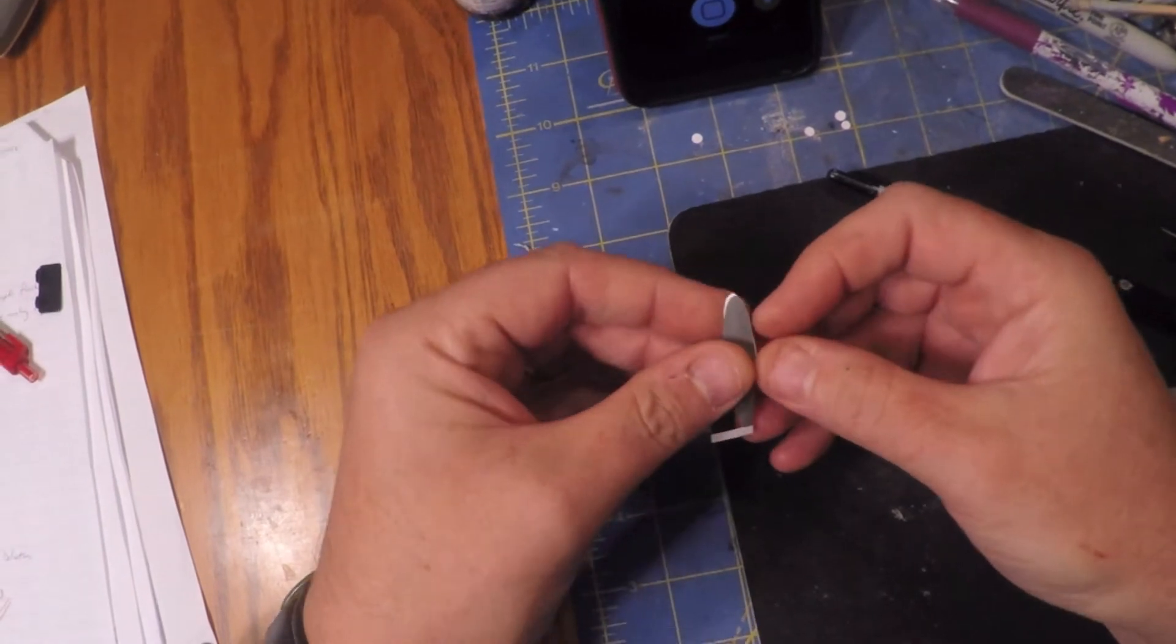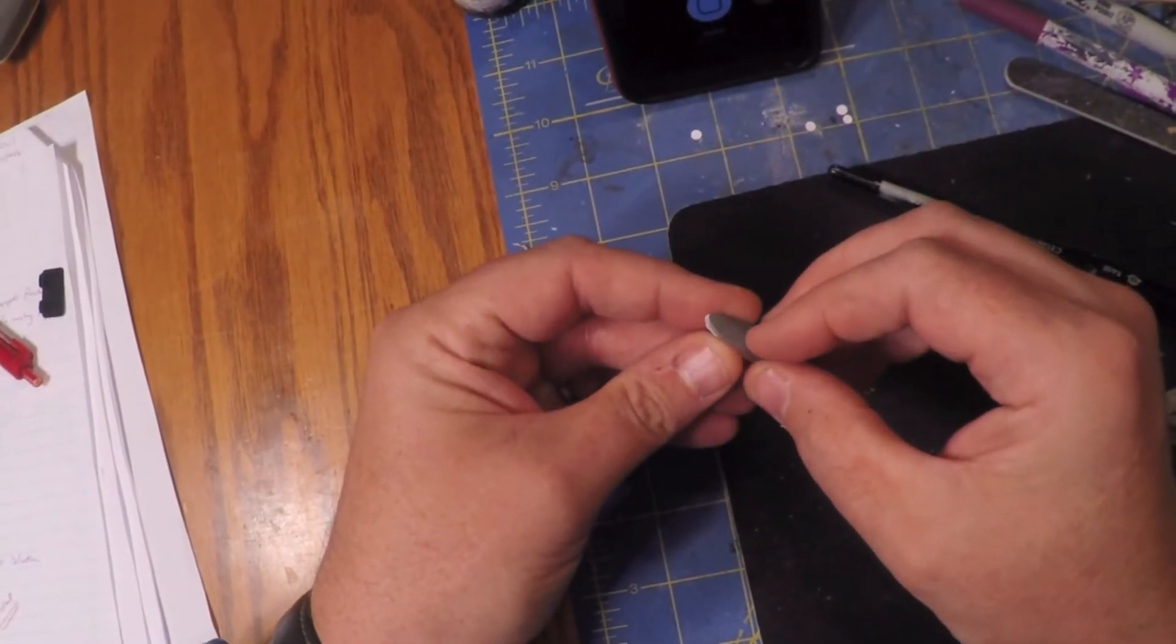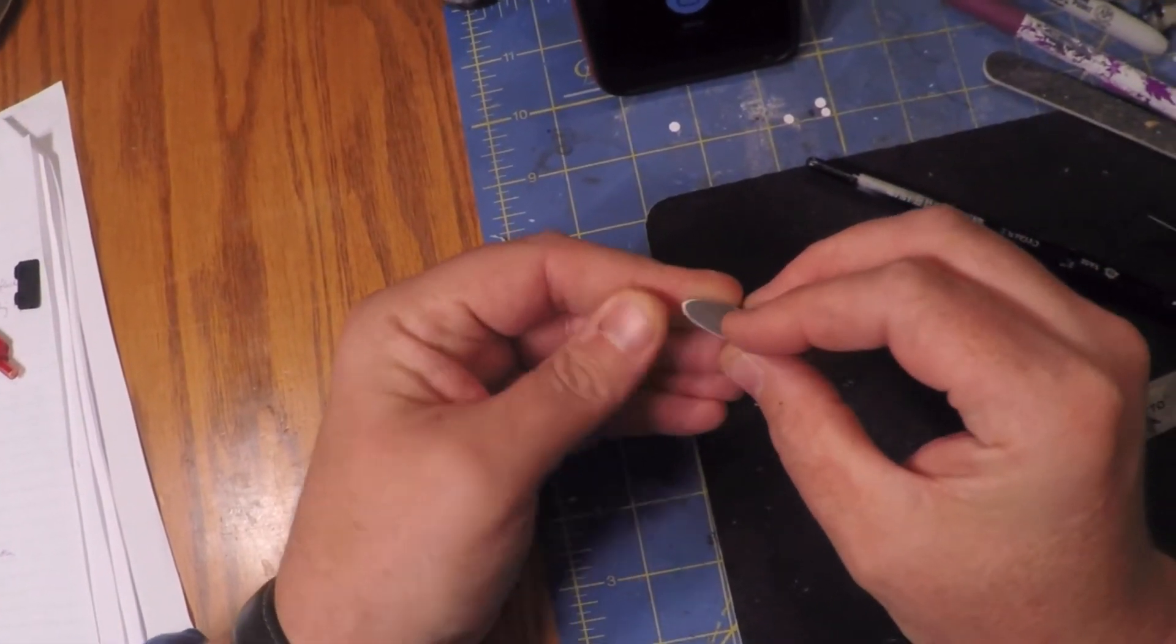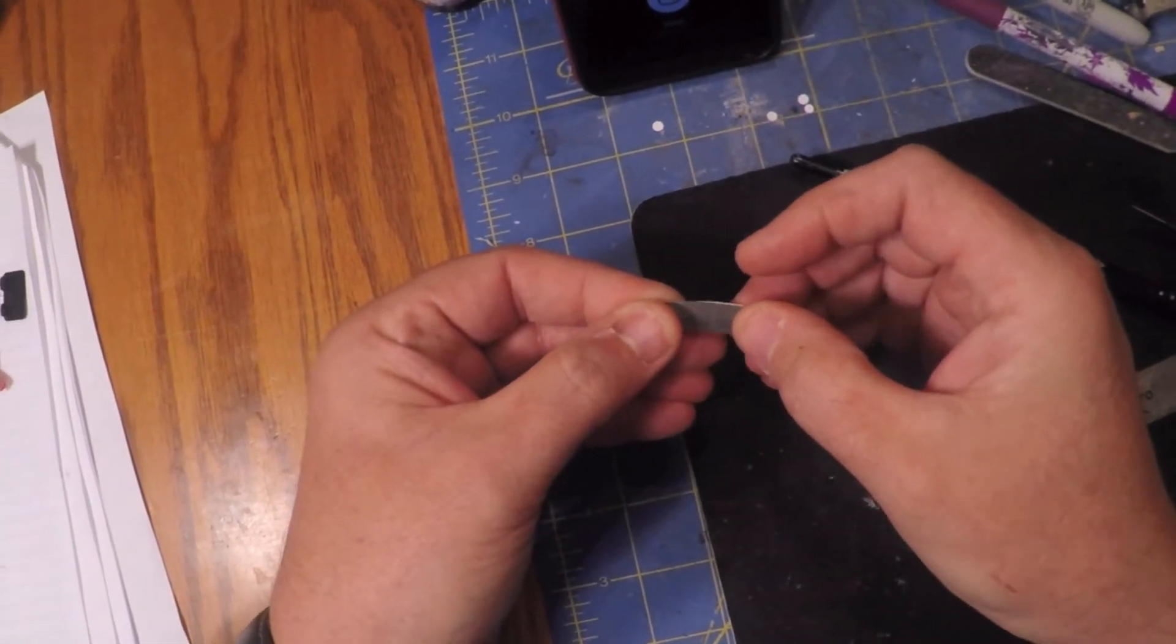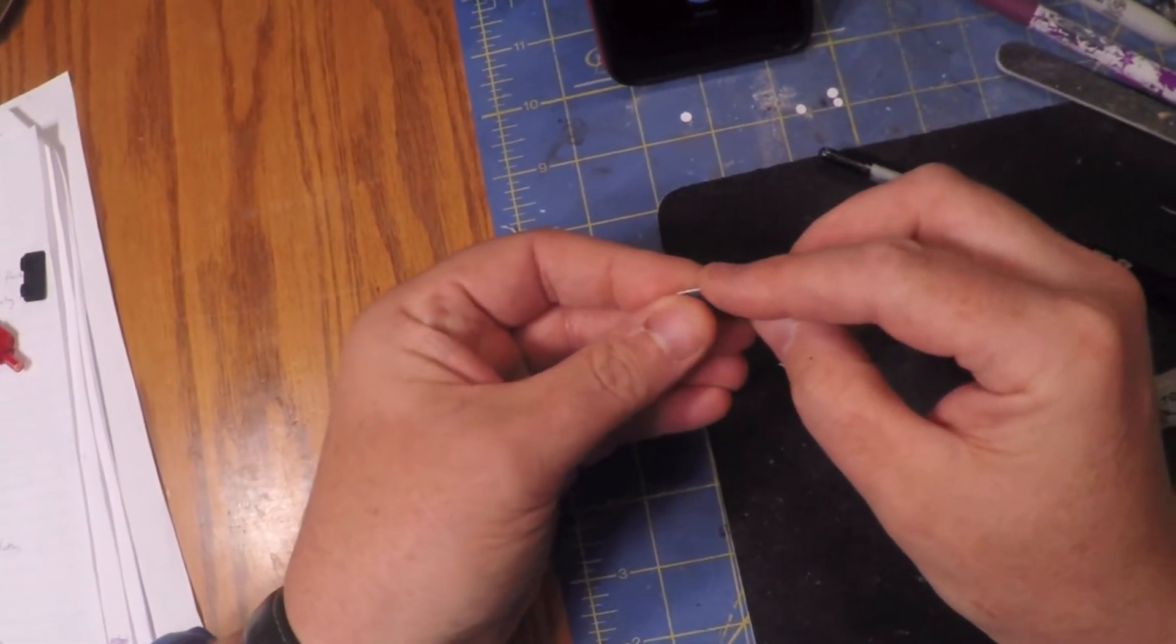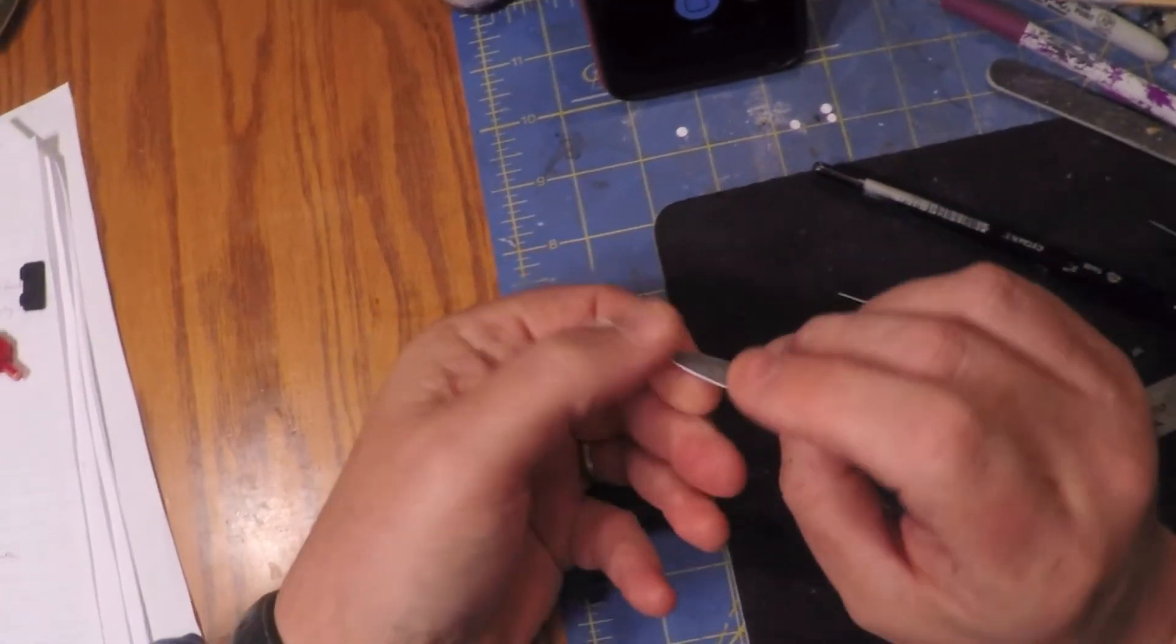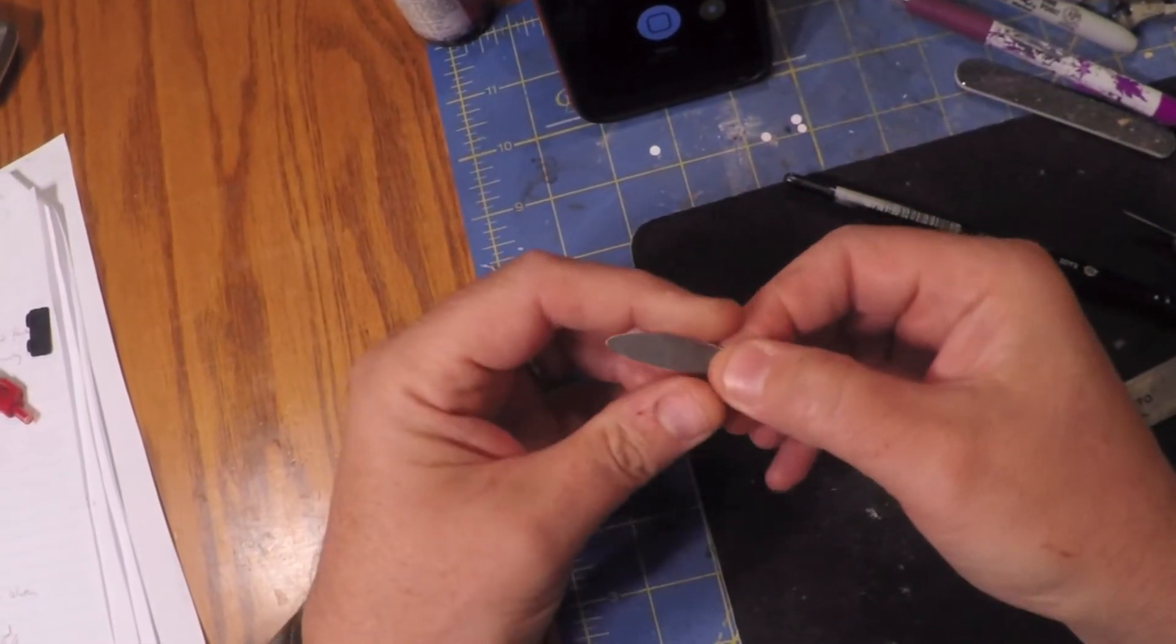But then when you fold this over, you just make sure it kind of matches up. Now in this case it doesn't match up perfectly, and these are going to be painted so it doesn't really matter. But you get as close as you can, and after you've done these, they could be sanded up a little bit too.